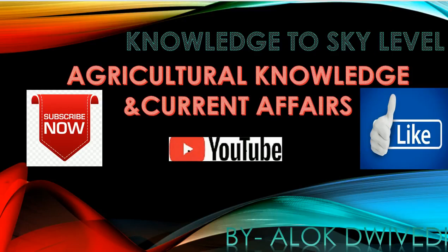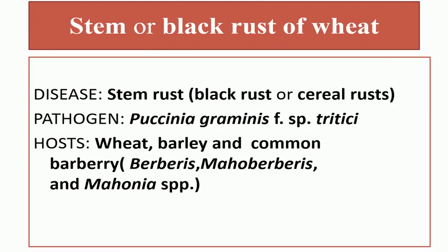Let's discuss the topic stem rust or the black rust of wheat. Stem rust is also known as black rust or cereal rust, because these rusts are caused on cereals. The pathogen causing the black rust of wheat is Puccinia graminis tritici, and the hosts are wheat, barley, and common barberry, including Berberis and Mahonia species.